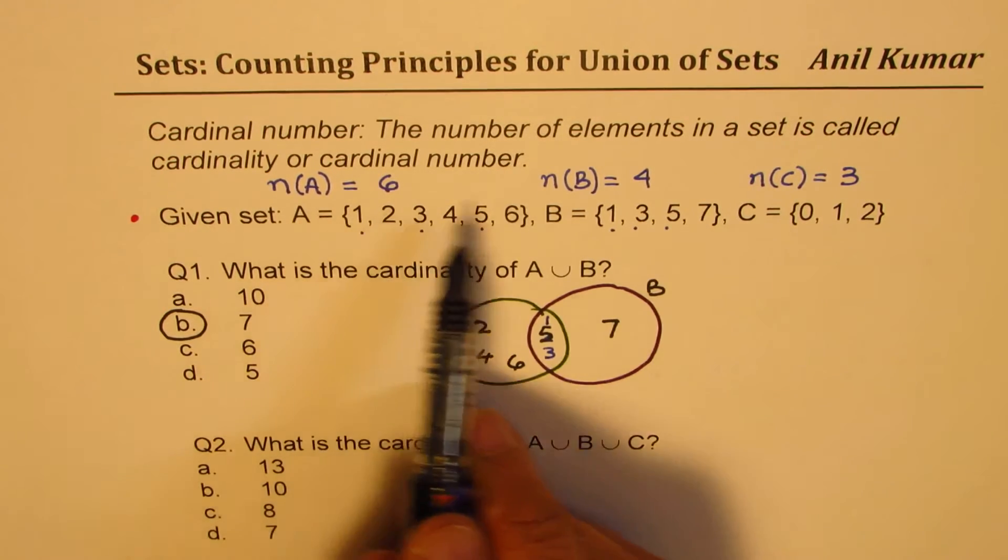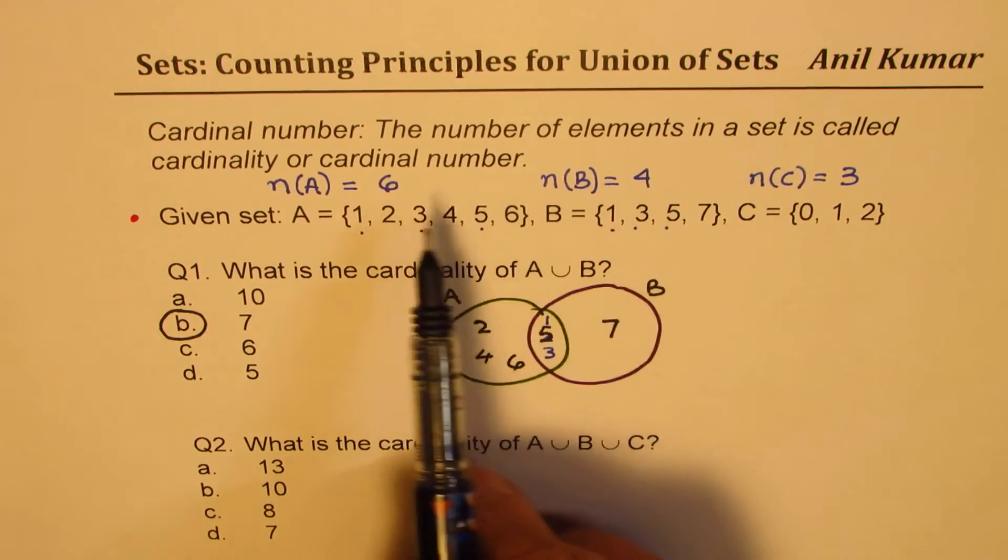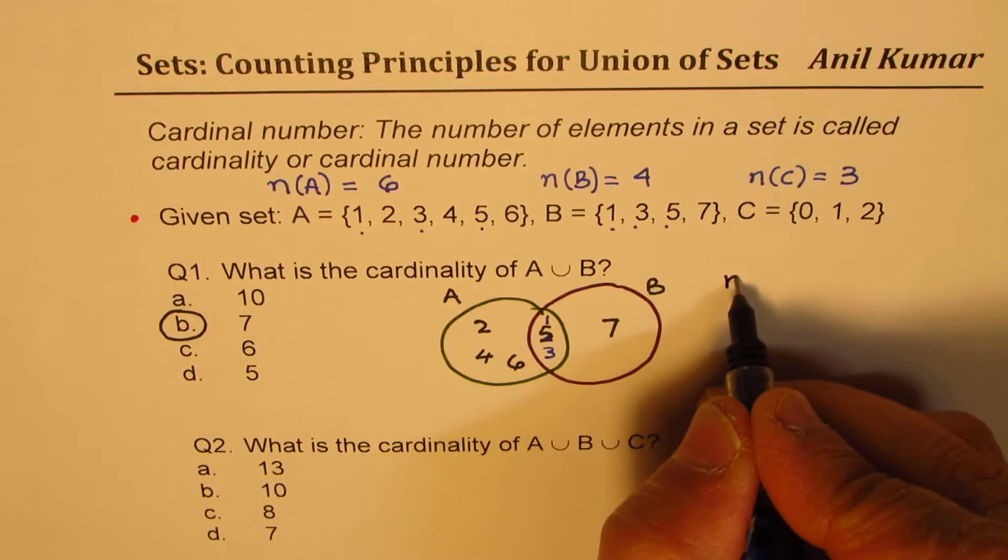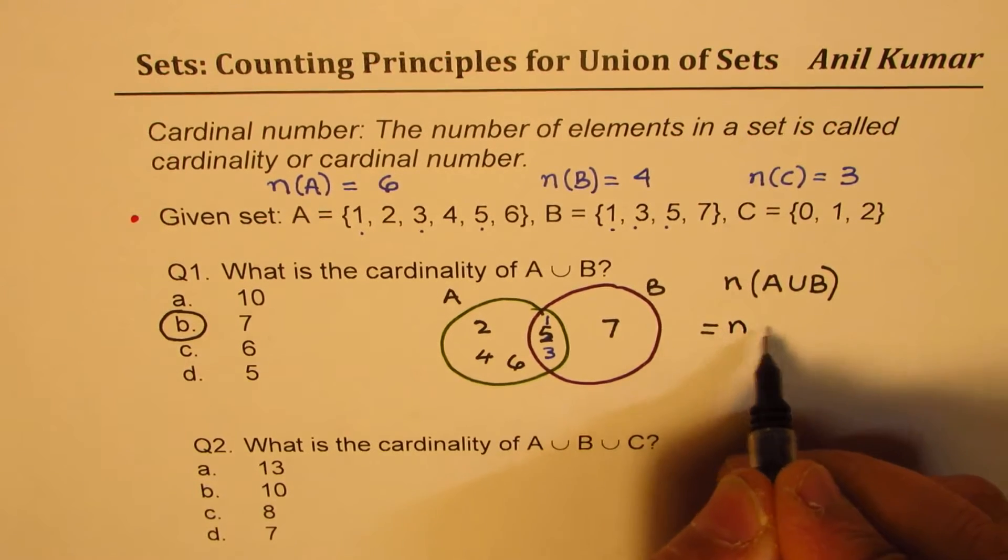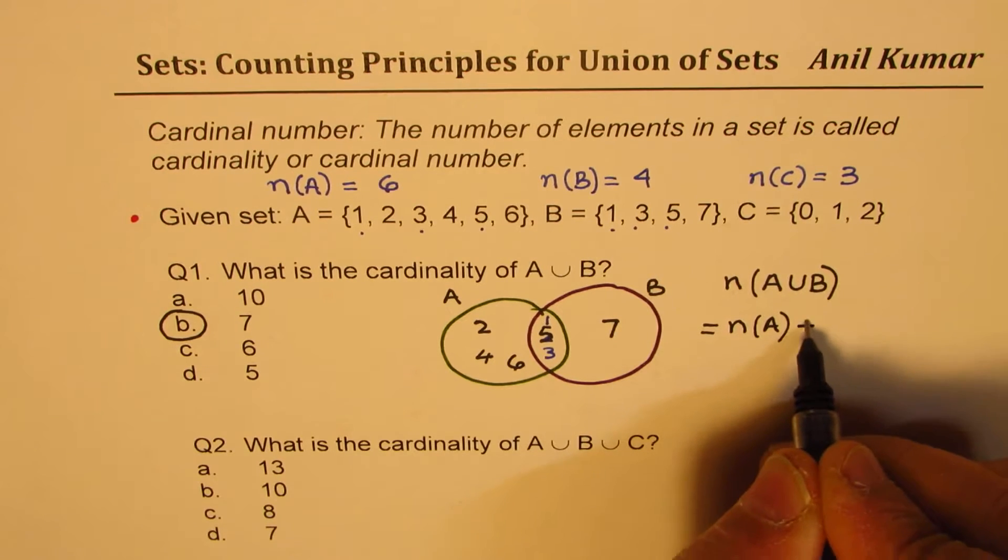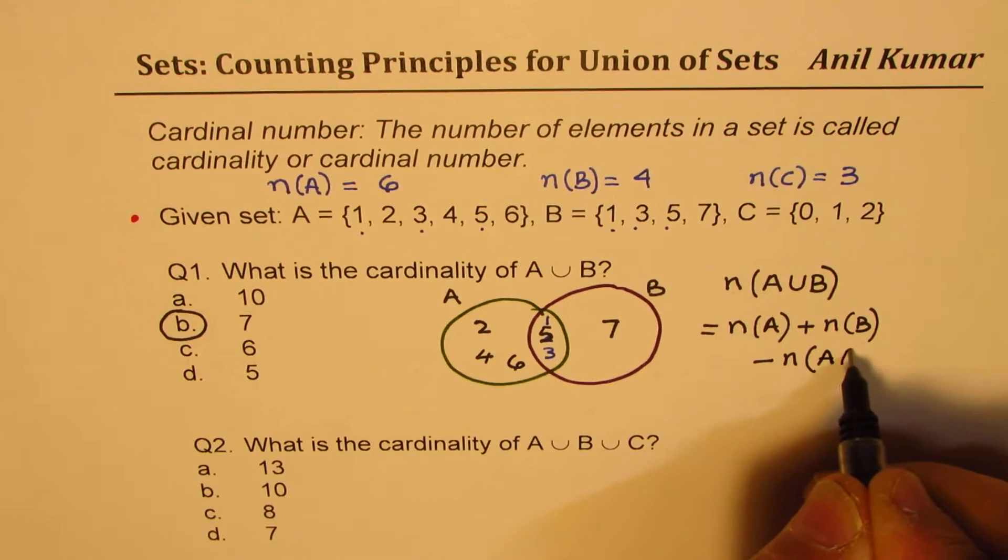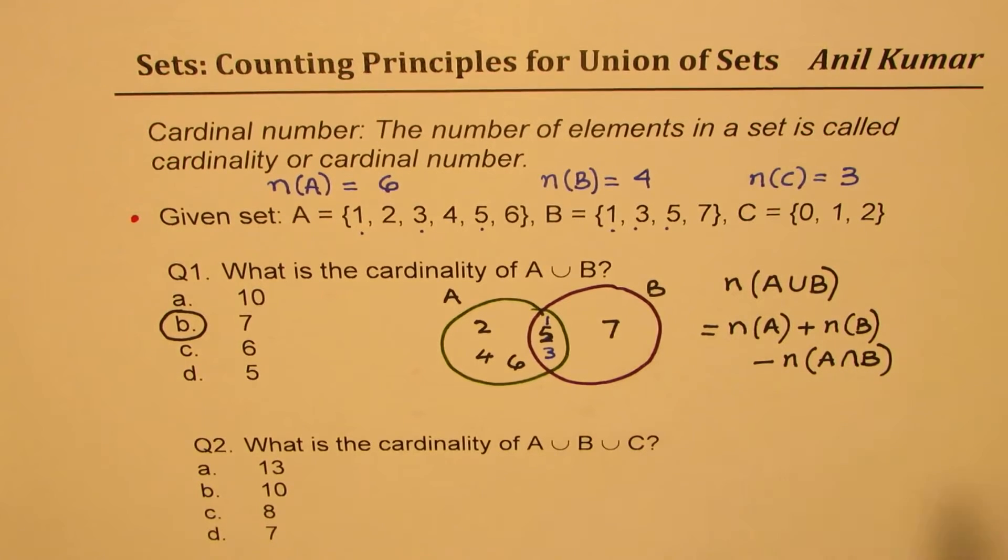You can also see from here that the number of elements in A is 6. In B, it is 4. 6 plus 4 is 10, but our answer is 7. Why is it so? So basically, you'll know that if we are counting the number of elements in union of two sets, then it is equal to number of elements in A plus number of elements in B and take away number of elements in A intersection B. This is a very important formula as sometimes you will be only given the numbers and not the elements, correct?